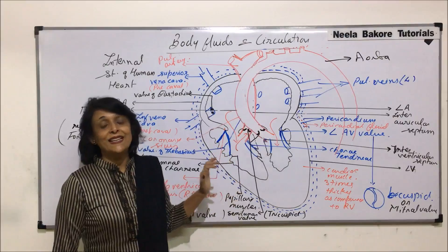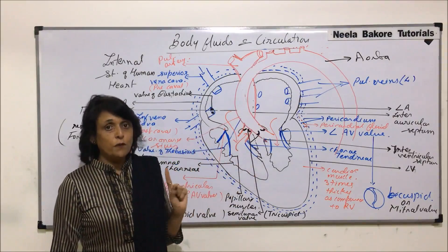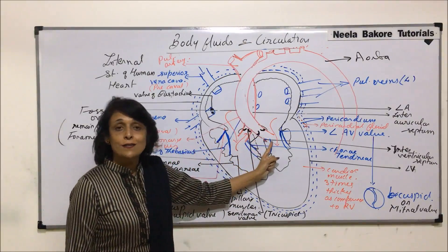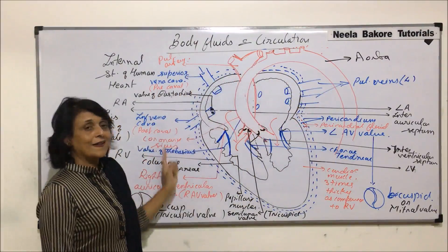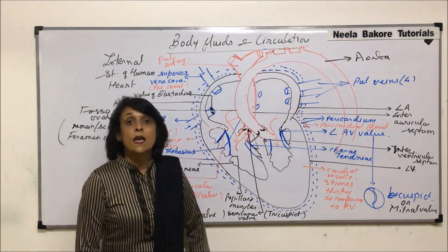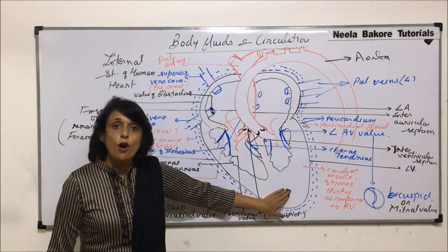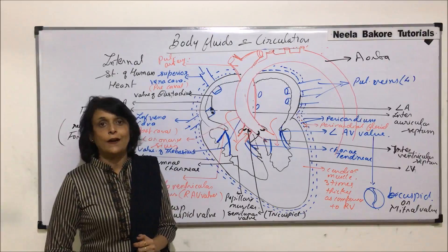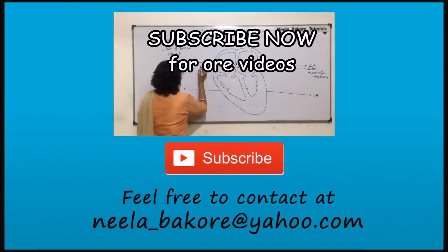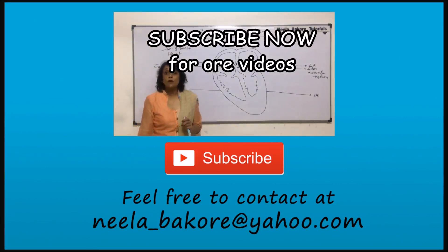This is the complete internal structure of the human heart. The bird's heart is also the same, with one difference: the aorta or systemic arch arising from the left ventricle takes a right turn instead of going to the left side. Otherwise, the mammalian heart and the bird's heart are the same. Now that we have understood the structure, we will see the working of the heart.